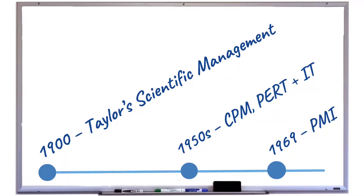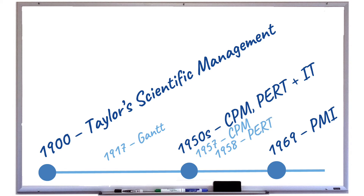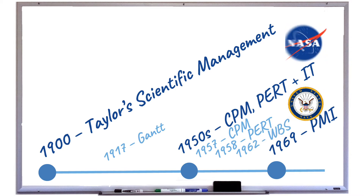The project management methodology as we know it is just an upgraded version of Taylorism, supported by IT and inventions that came after Taylor — like the Gantt chart, critical path method, and program evaluation and review technique, developed roughly in the 1950s — followed by work breakdown structure in 1962, used by the U.S. Navy and later by NASA, which made project management methodology all the more popular.